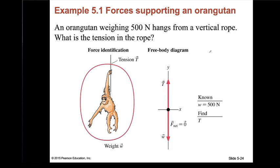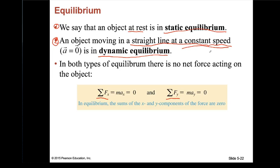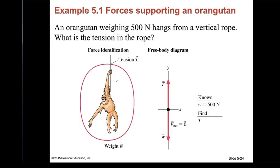Example: an orangutan weighing 500 newtons hangs from a vertical rope. What's the tension in the rope? First, what is the status of the orangutan — is it in equilibrium? Yes. Which type of equilibrium? Since it is at rest, it is in static equilibrium.